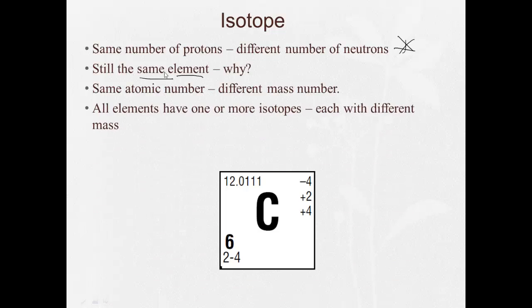So pretty much all elements have one or more isotopes, each with a different mass. And like I pointed out in the last video, the atomic mass here is a weighted average of the naturally occurring isotopes.